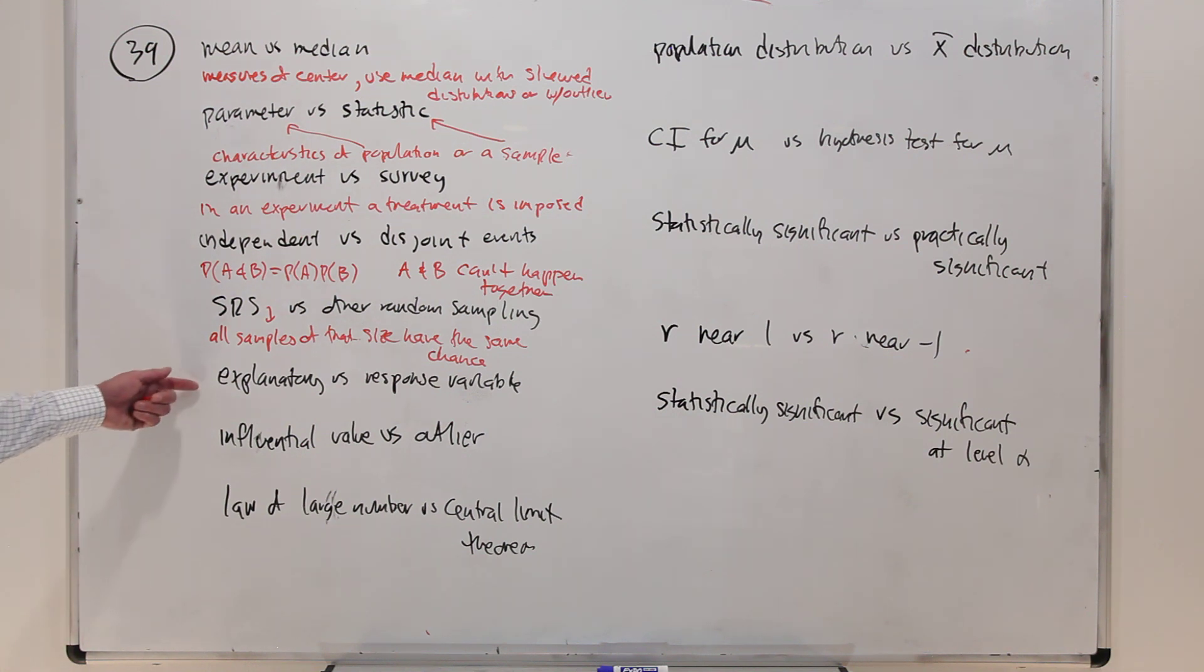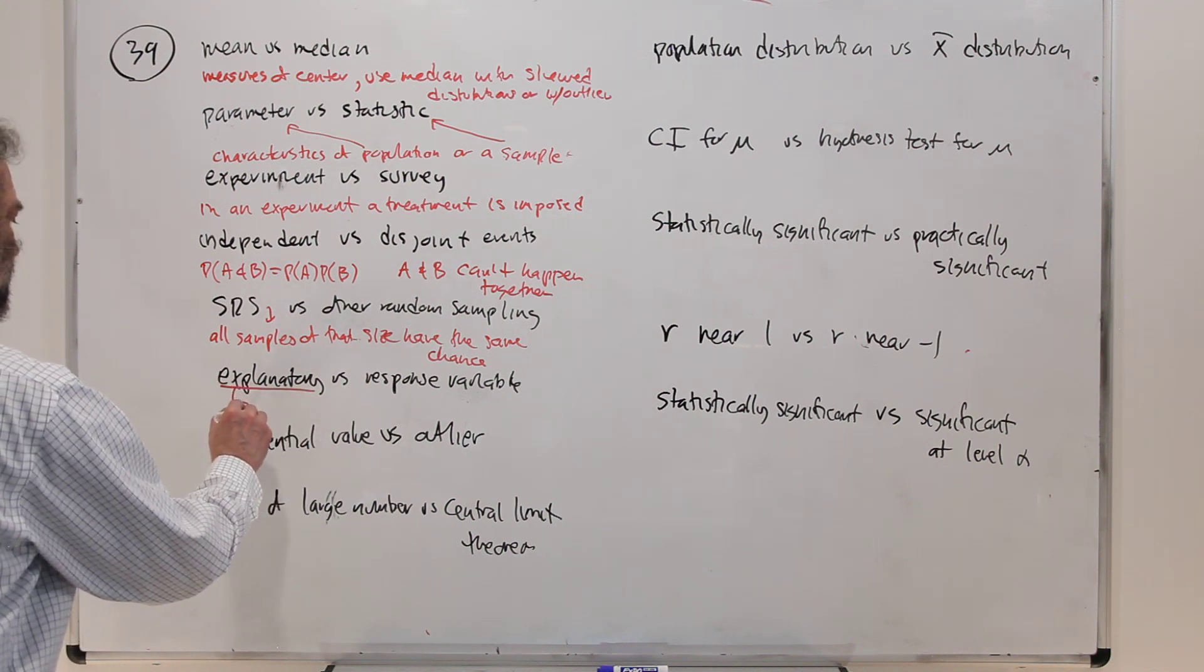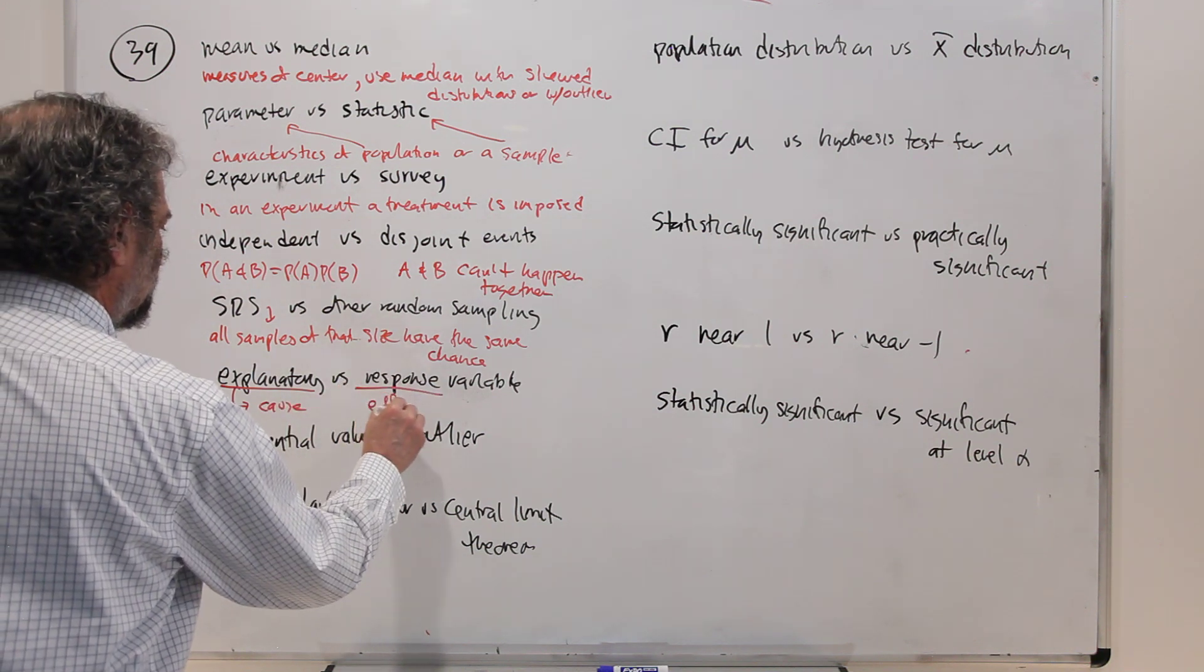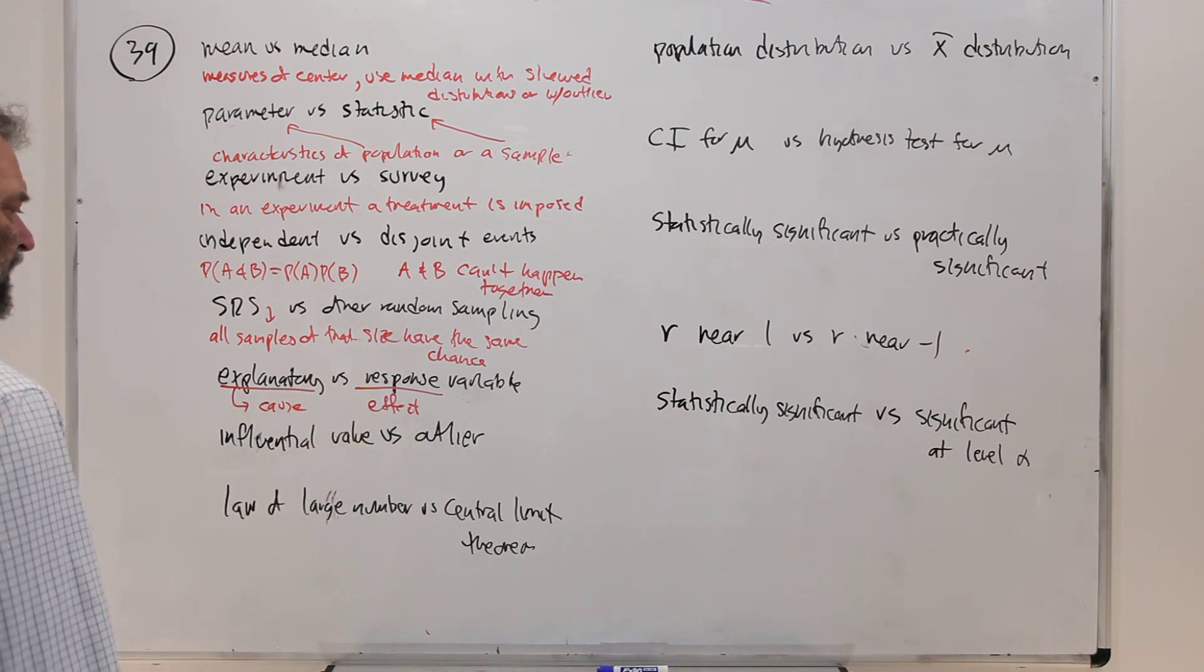Explanatory versus response variable. This is maybe a regression topic. Explanatory, we would think, is the cause and the response is the effect. So we change this number, we expect that number to change along with it. Maybe that's the way to think about it.